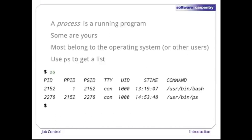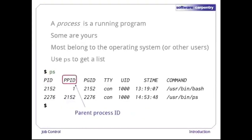Here's some typical ps output. Every process has a unique process ID — remember, this is a property of the process, not of the program that process is executing. If you are running three instances of your browser at once, each will have its own process ID. The second column shows the ID of each process's parent. Every process on a computer is spawned by another, which is its parent, except for the boot process that runs automatically when the computer starts up.